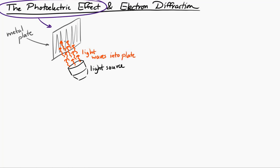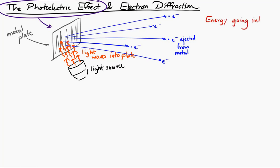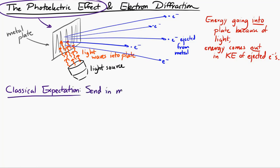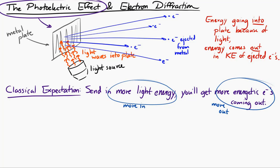If you do this, you'd expect that you can eject electrons from the metal plate. You send energy in through these electromagnetic waves, it's absorbed by the material, and the energy comes out with these electrons that carry kinetic energy as they fly away from the plate. The classical expected result is that if you send in a lot of light energy, you get a lot of energetic electrons ejected from the metal. You send energy in with the electromagnetic waves, and you'll get energy out with the kinetic energy of these ejected electrons. But this is not exactly what is observed.